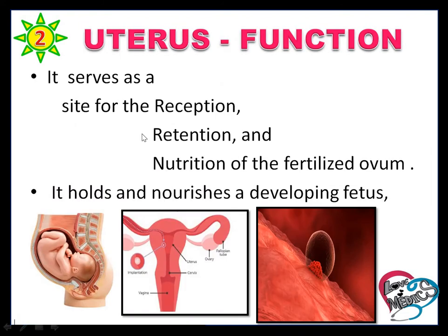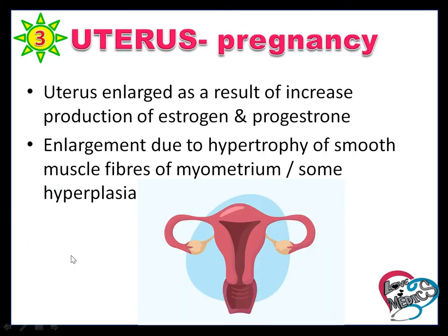Function of the uterus: it serves as a site for the reception, retention, and nutrition of the fertilized ovum, and it holds and nourishes the developing fetus. During pregnancy, the uterus enlarges as a result of increased production of estrogen and progesterone. The enlargement is due to hypertrophy of smooth muscle fibers of the myometrium and some hyperplasia. Hypertrophy means the size of cells is increased, and hyperplasia means the number of cells is increased.